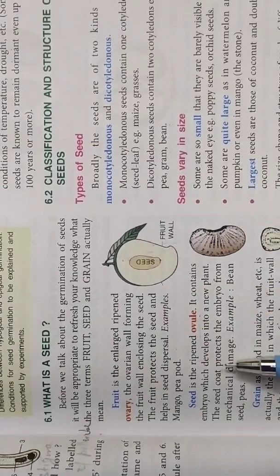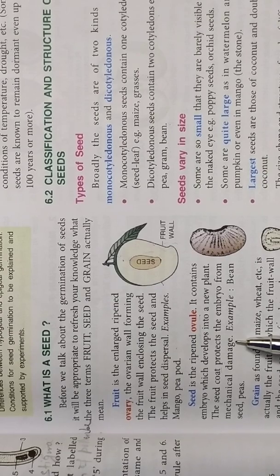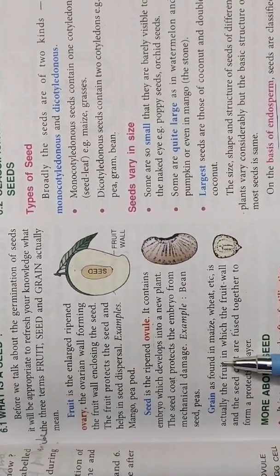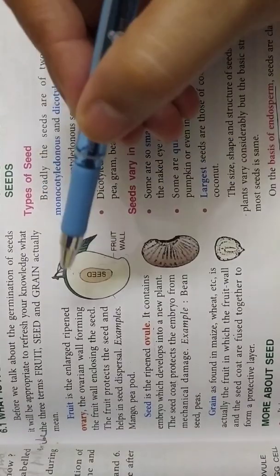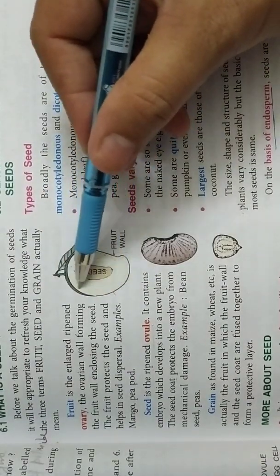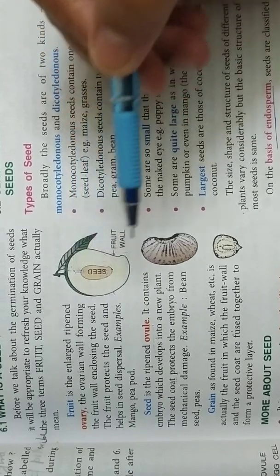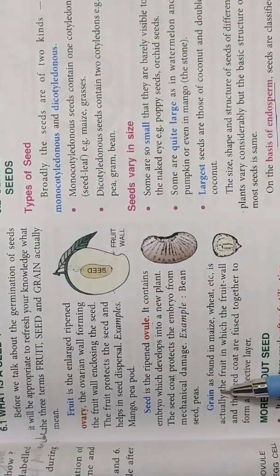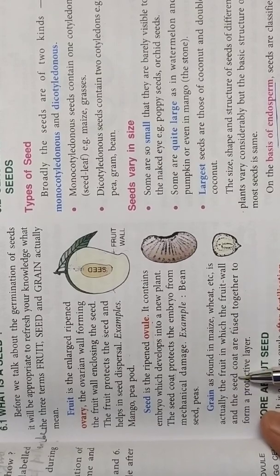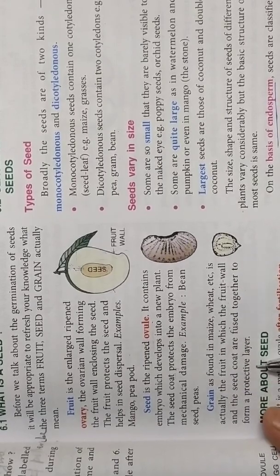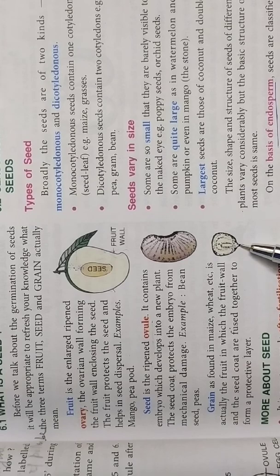Seed is ripened ovule. It contains embryo which develops into new plant. The seed coat protects the embryo from mechanical damage. And the third term you must have read about grain. Grain is that seed in which the fruit and the seed wall is fused. The fruit wall and the seed wall they are fused together to form a protective layer we call it seed coat. Grain as found in maize, wheat etc. is actually the fruit in which the fruit wall and the seed coat are fused together to form a protective layer. Then we will call it grain.